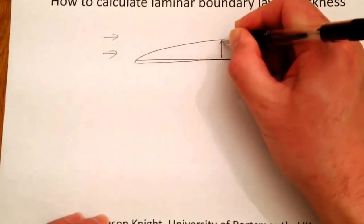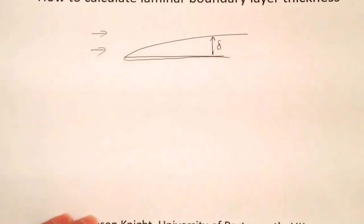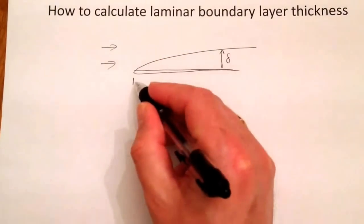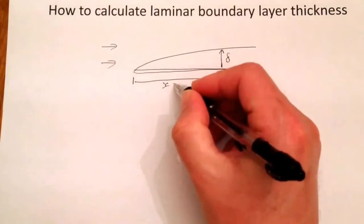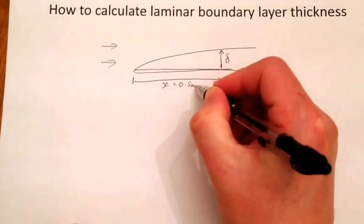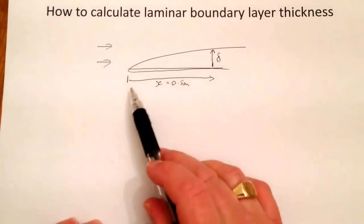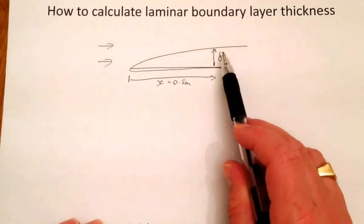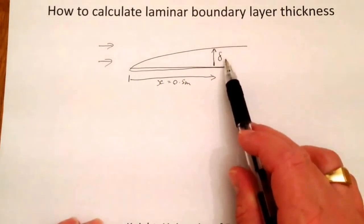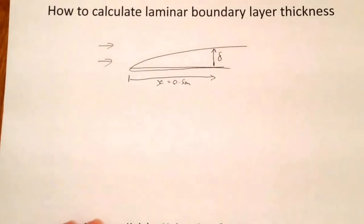The thickness of the boundary layer is commonly denoted as delta. And at a certain distance, let's use distance x equals half a meter. So at a certain distance along this plate we get our boundary layer thickness. And the further along the plate you go, the boundary layer thickness grows.